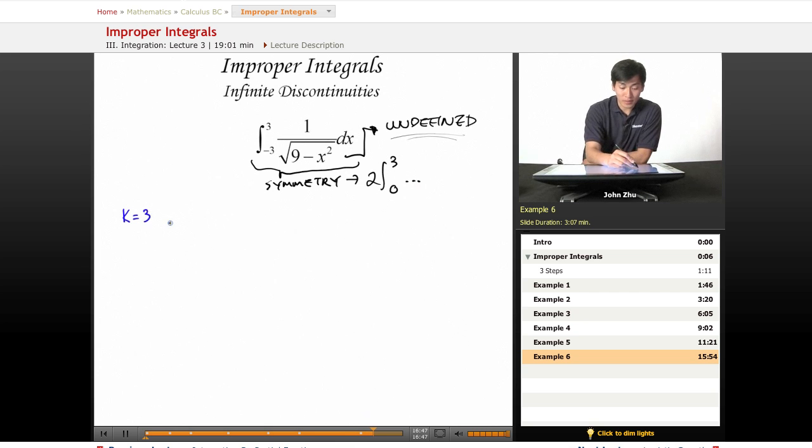We are thus taking the limit as k approaches 3 from 0 to k, 1 over square root of 9 minus x squared dx.